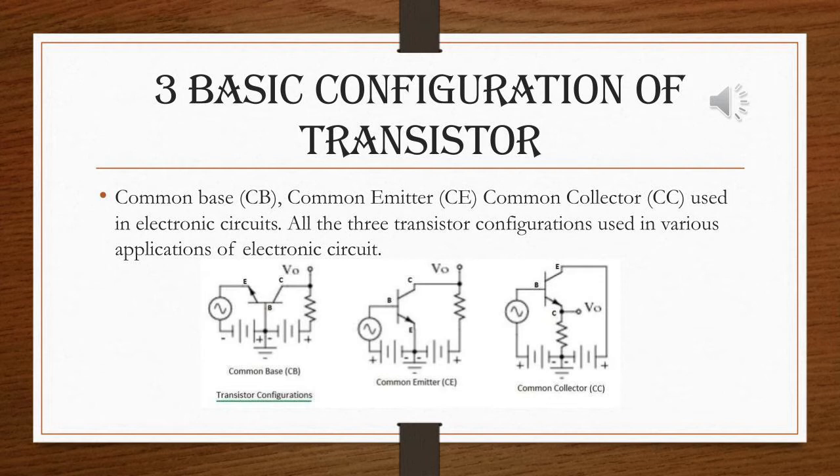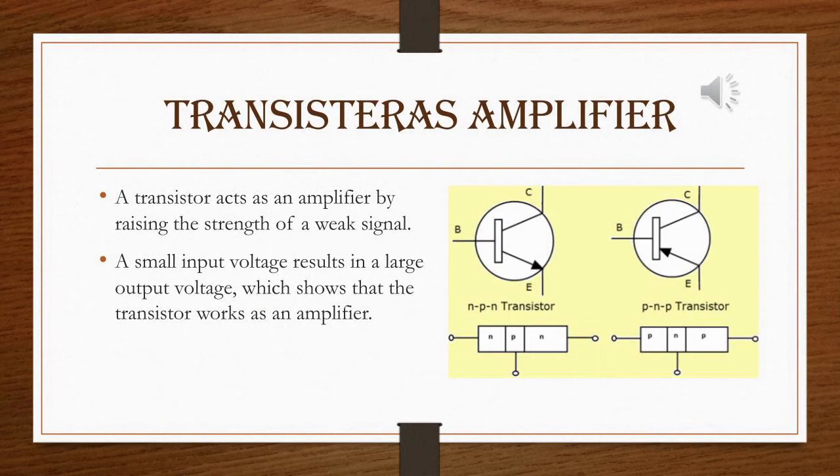How does a transistor act as an amplifier? A transistor acts as an amplifier by raising the strength of a weak signal. A small input voltage results in a large output voltage, which shows that the transistor works as an amplifier.